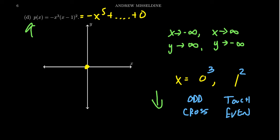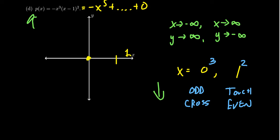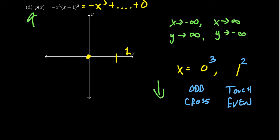Let's mark up our x-intercepts: we have 0 and 1. It's nice to have a starting point — I like to use the y-intercept, or you can pick any point like x equals negative 1. Personally, I'd like to do as little arithmetic as possible. So what I'm going to do is figure out what happens when x goes to 0. If there's a y-intercept other than 0, I'll use that to start connecting the dots. If the y-intercept is 0, I'll figure out what happens as x approaches 0.